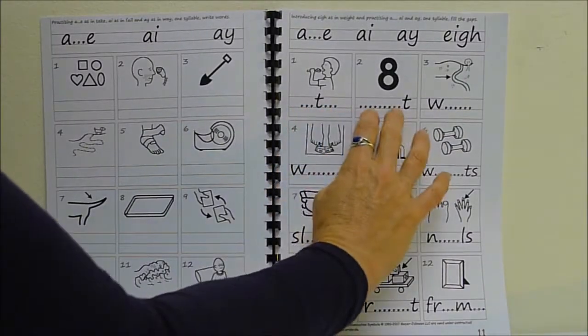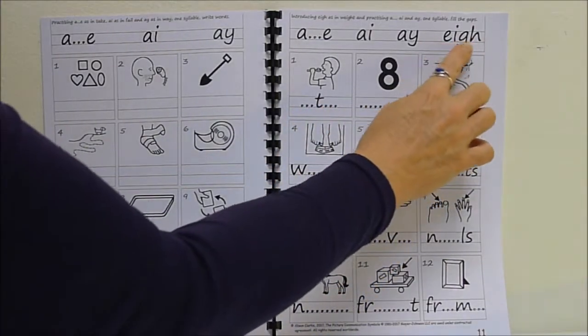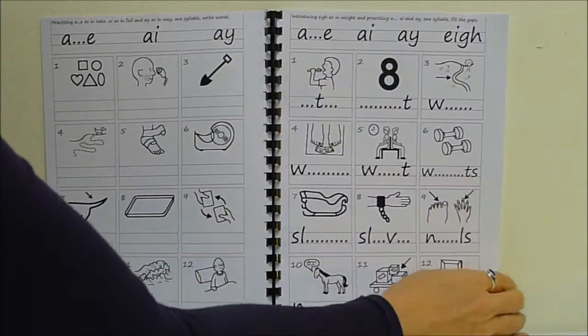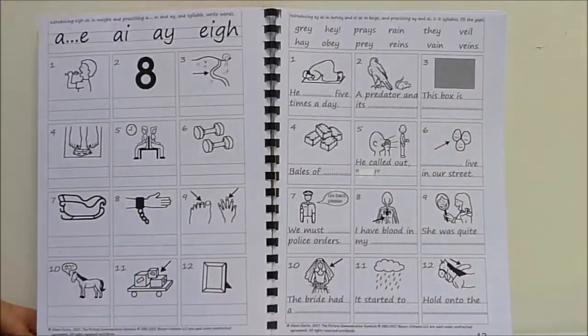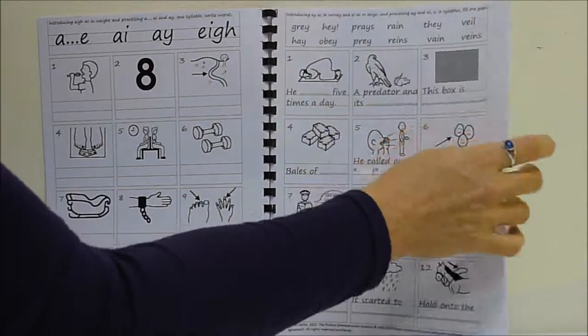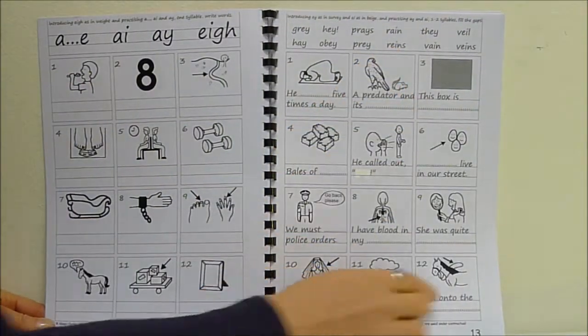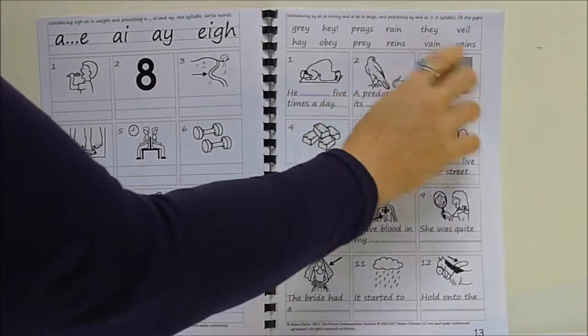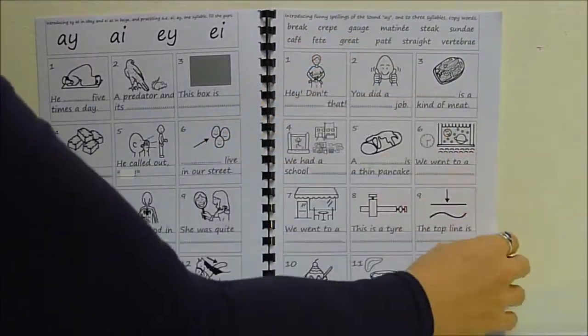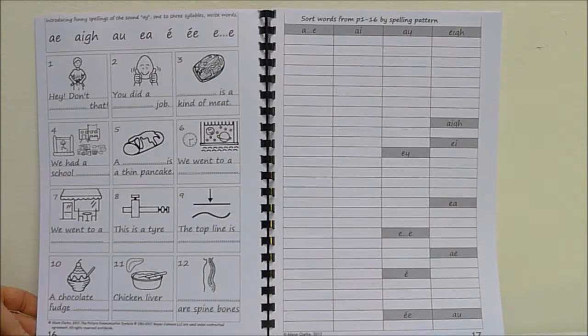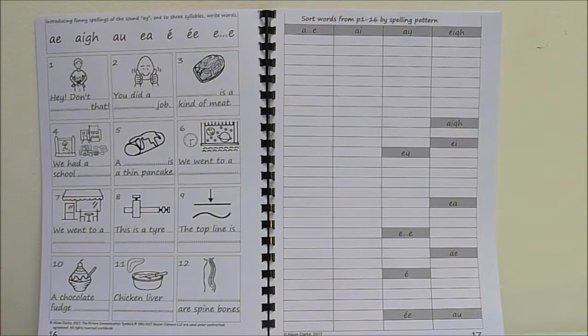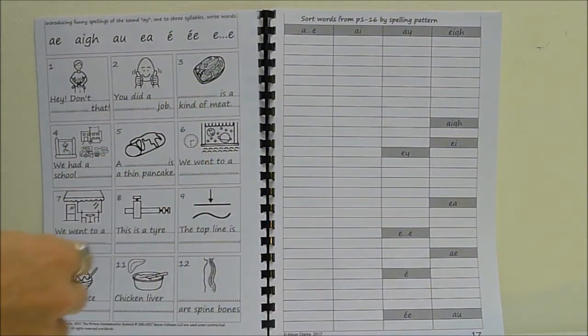Here we have eight as in ate my lunch and eight as in the number right. So a new spelling with A like this. Weigh and weigh yourself. Which way are we going and weigh yourself? Wait a minute versus the weights that you use in weight training and so on. Then some others like A as in grey with an EY, grey and hay and rain. So reins on a horse as contrasted with rain falling from the sky. They of course is very common high frequency words kids will often know. And then break and crepe and gauge. So some sort of funny spellings of A.